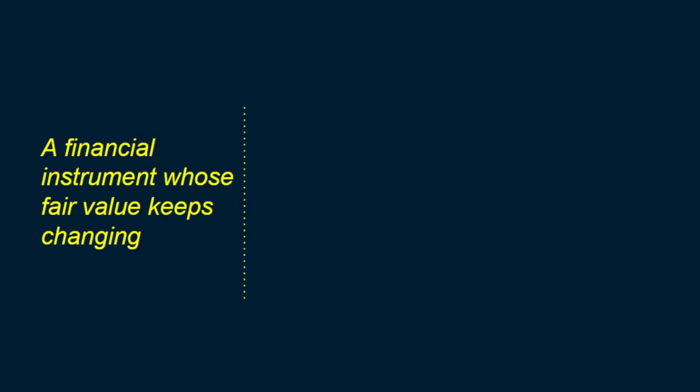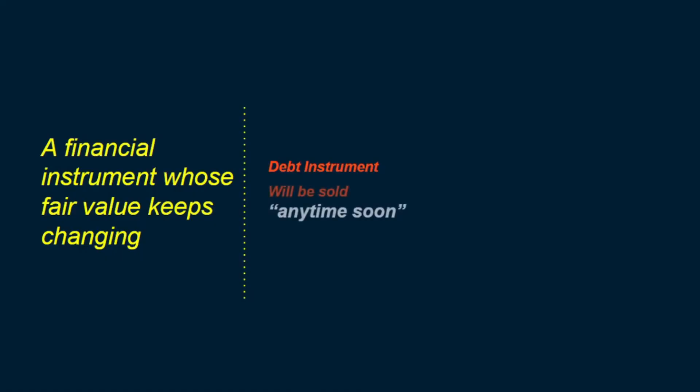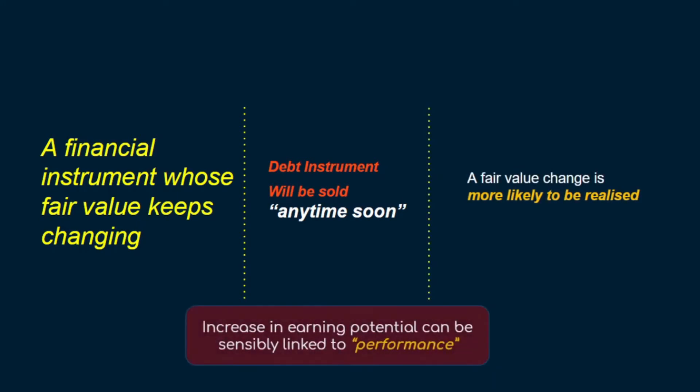But which statement — OCI or profit or loss? Before we answer that question, consider the debt instrument example again. Although in the case of a debt instrument we expect to receive known fixed amounts in the future, what if we expect to sell that particular debt instrument anytime soon? The scenario has changed, because since we want to sell that asset, the fair value of that asset is more likely to be realized, and therefore it's more relevant to the performance of the entity and more deserving of being reflected in profit or loss.